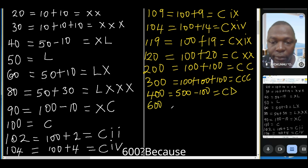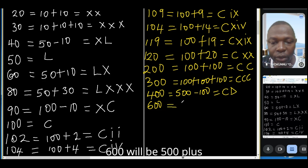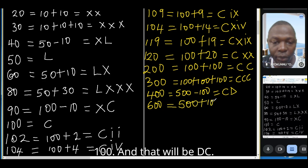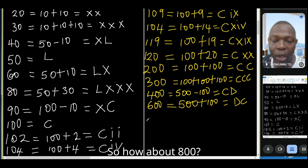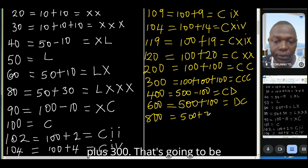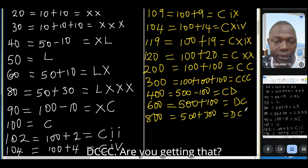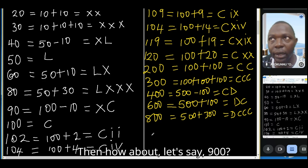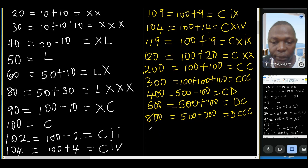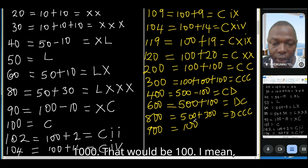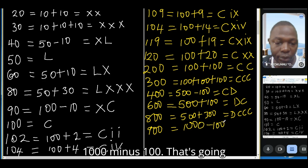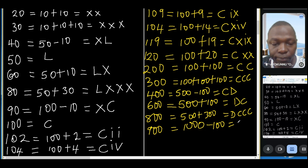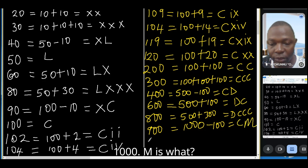Six hundred is 500 plus 100, which is DC. Eight hundred is DCCC. Nine hundred is 1000 minus 100 — since M is 1000, that gives CM.